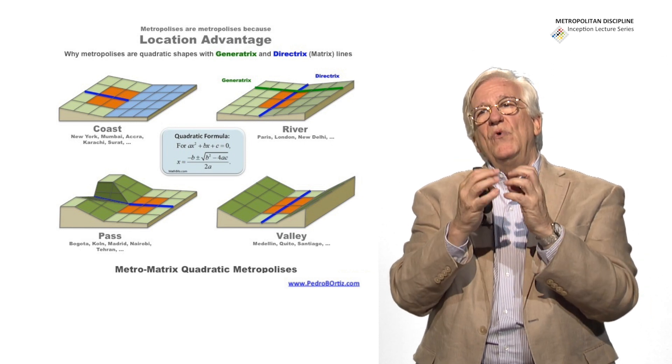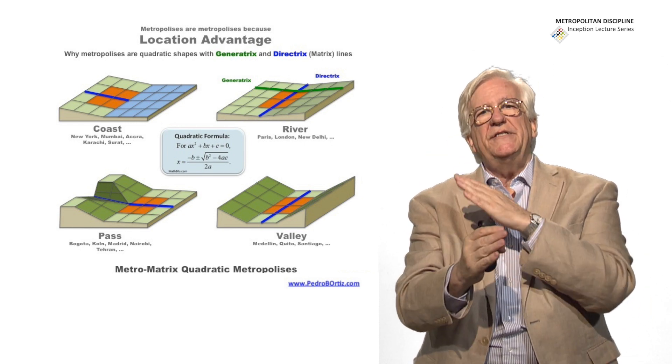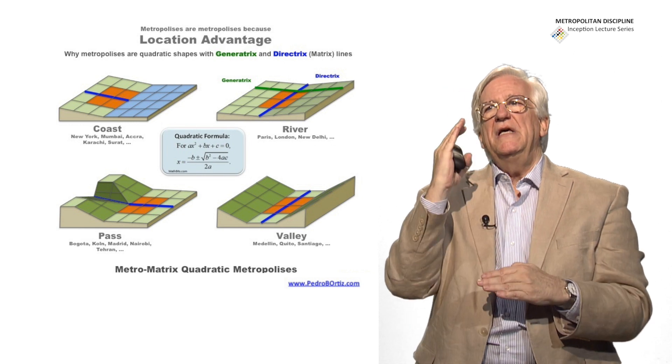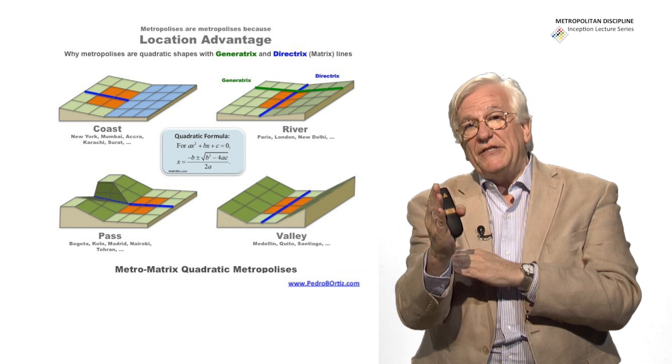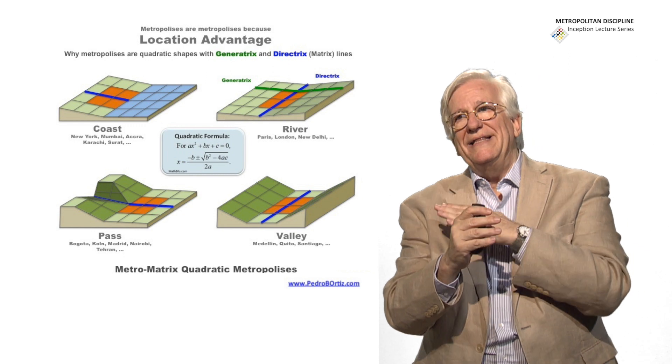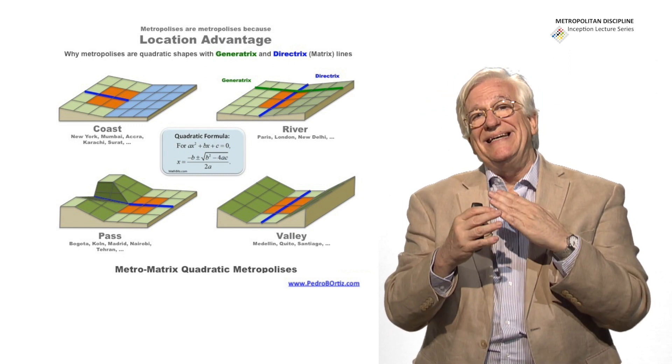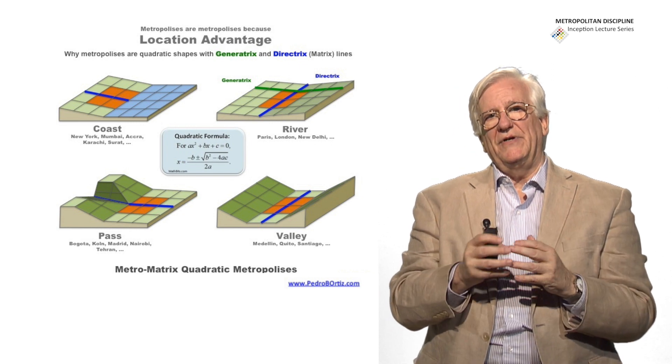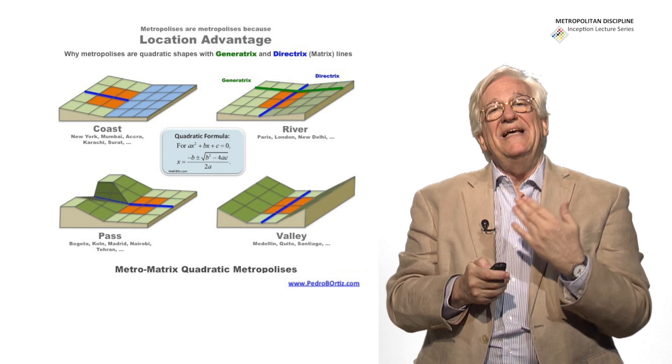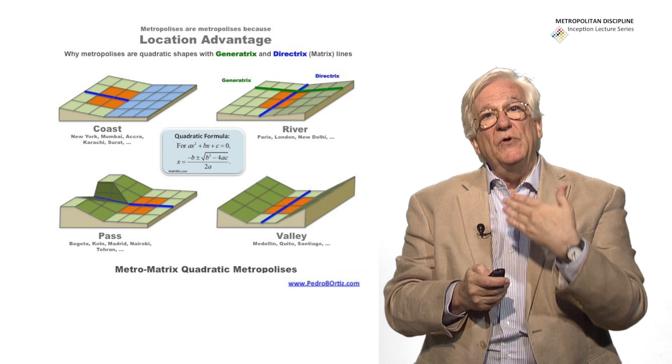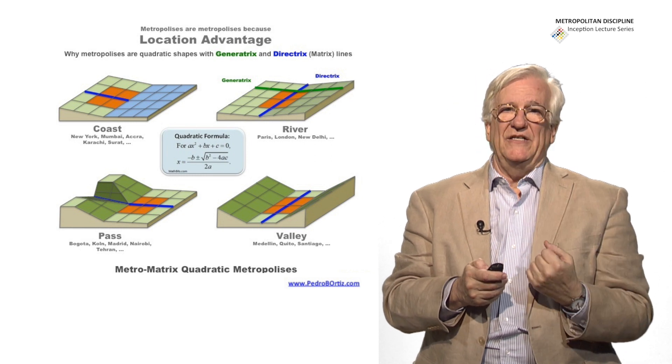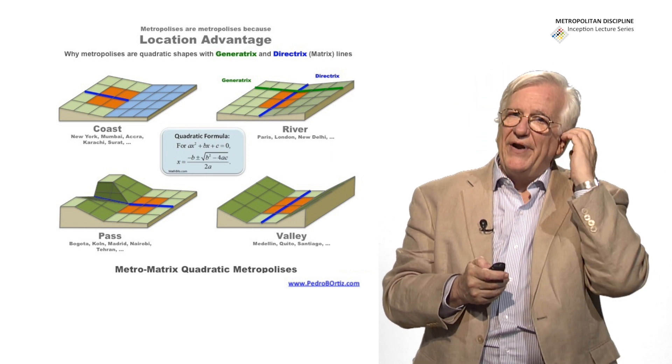But that provides them with the main directionality and a transversal directionality. The main directionality is the directrix of the quadratic curve, and the perpendicular directionality is the generatrix of the quadratic curve. And we must understand these complexities to be able to deal with the physical decisions that will create the metropolis.